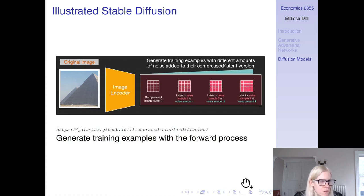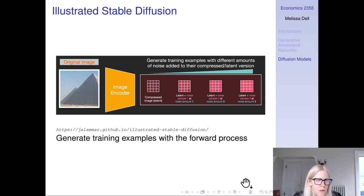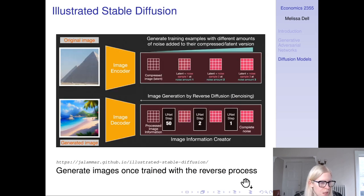We have this image encoder, and we generate training examples with the forward process by adding different amounts of noise to the corresponding latent version of the image. Once we've trained the model, we generate images with this reverse process.